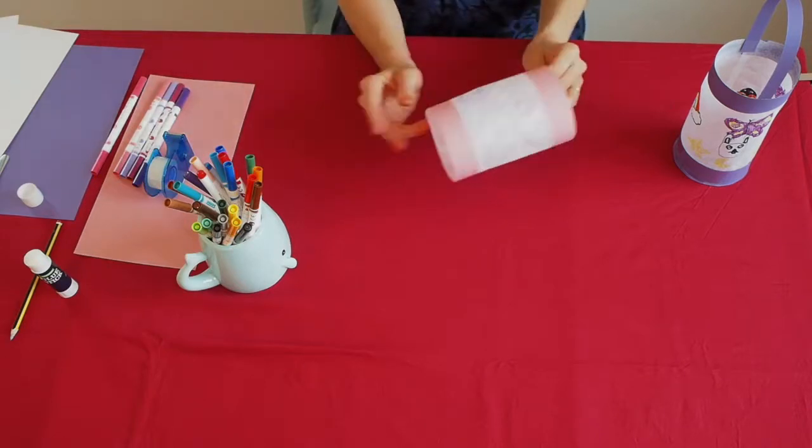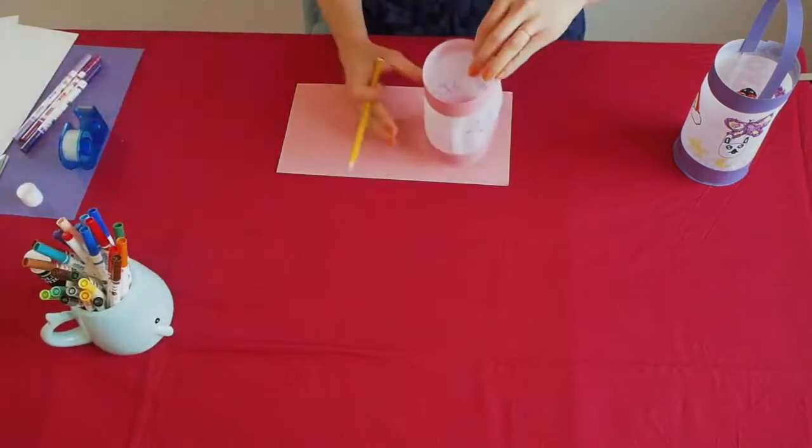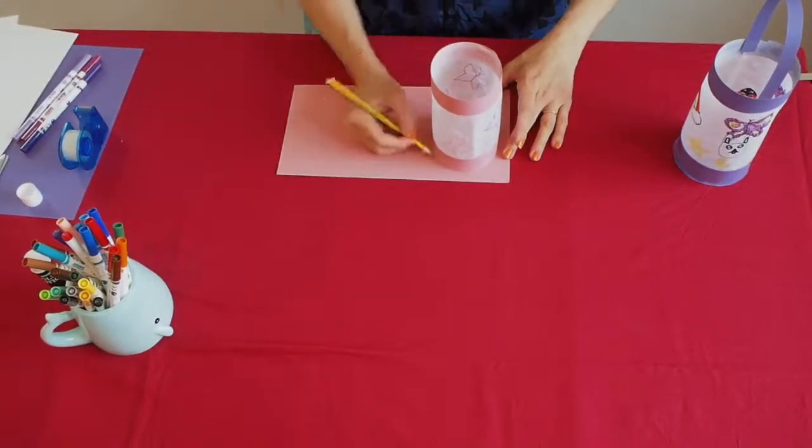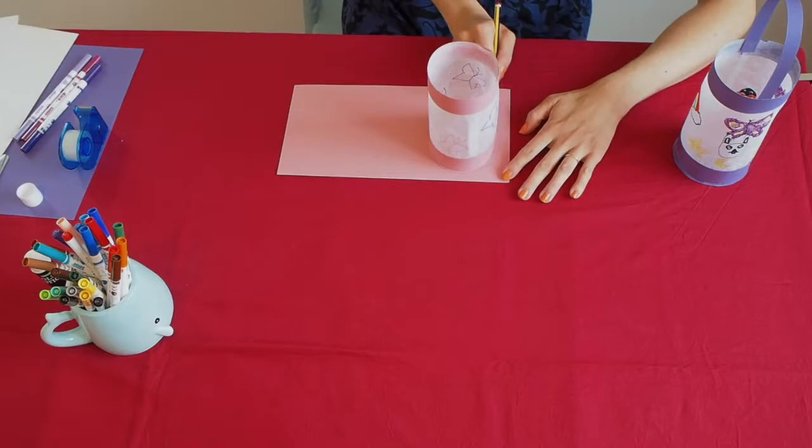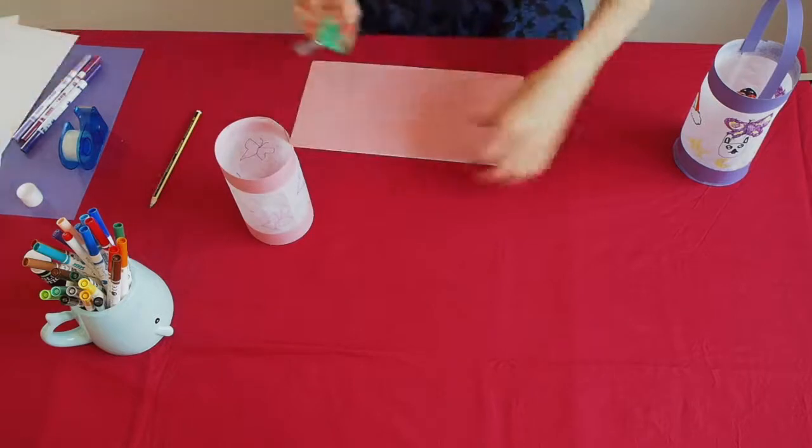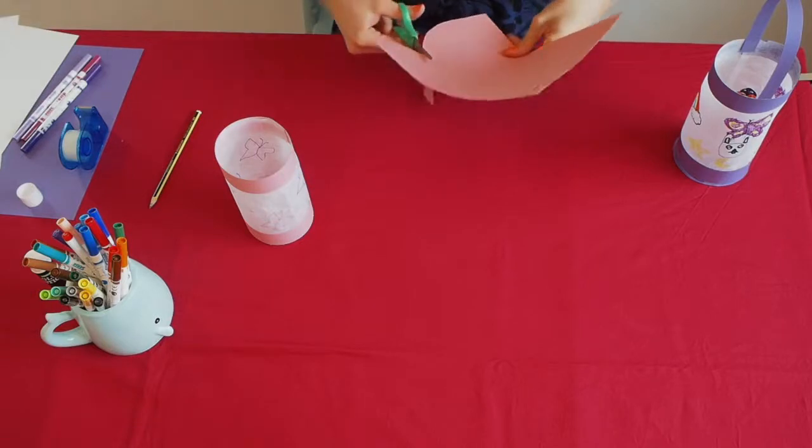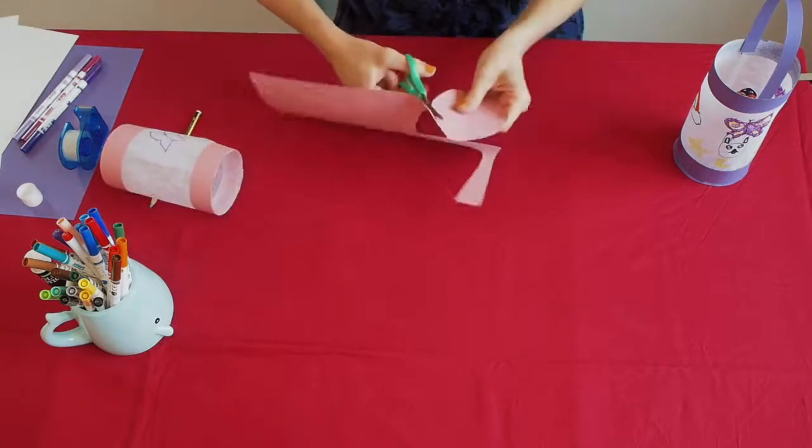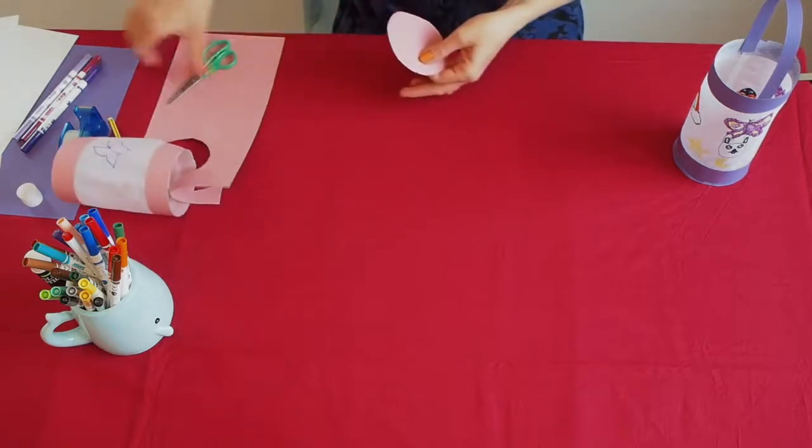Now it's time to make the base. We take a piece of paper we left aside. We place the paper lantern on top and we just make a rough circle around it. And we cut it out.